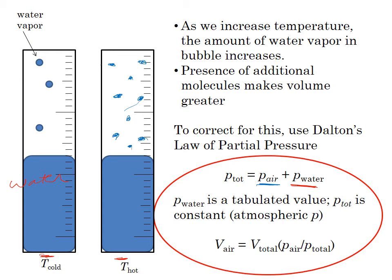This vapor pressure of water is a tabulated value. It's one that you can look up in the laboratory manual. P total is a constant. It's atmospheric pressure on a given day. And if this is something I could look up, pressure total is a constant, I could calculate P air. Once I have the partial pressure of air, I can use another gas law, a version of Boyle's Law, which would tell me that the volume that this air would occupy is given by the ratio of P air to P total times volume total.